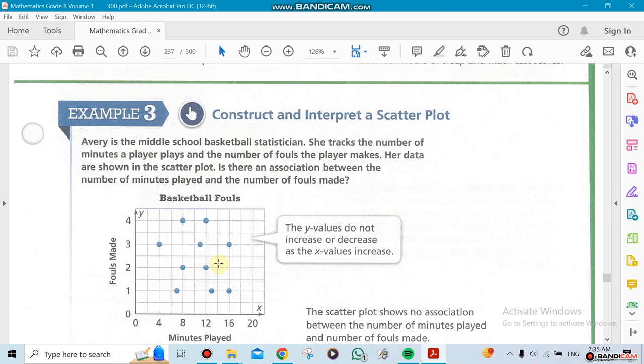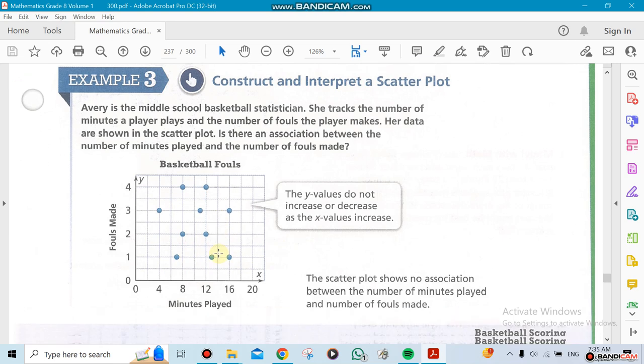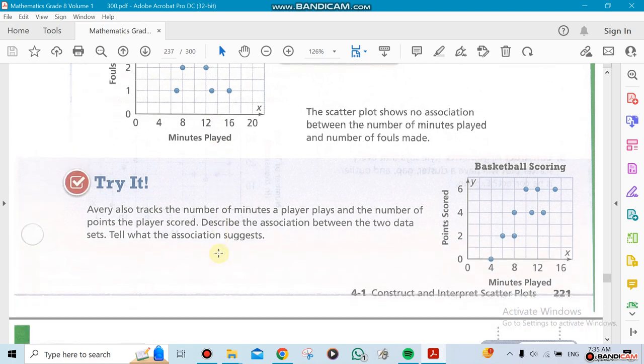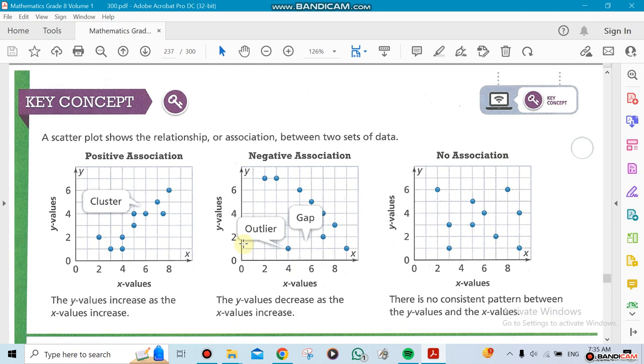If you could draw a line that goes from here to here, you could see you could probably catch some of those dots or plots. Here's a cluster where most of them are gathering around each other.